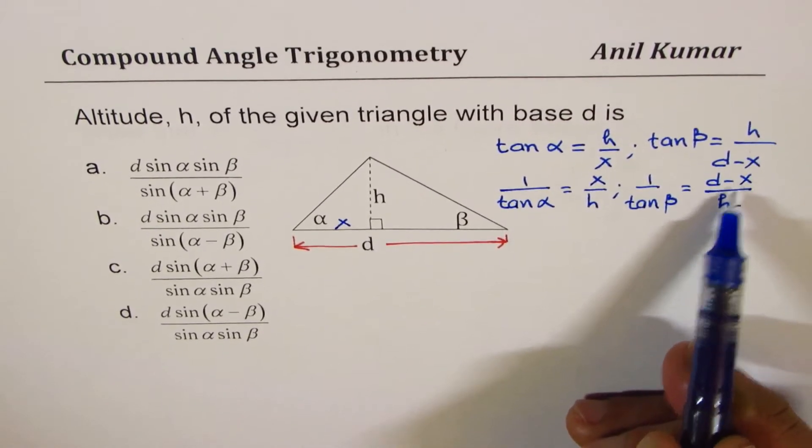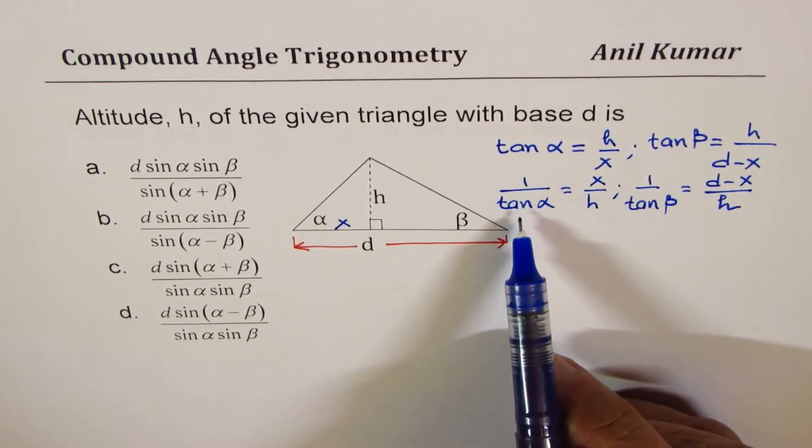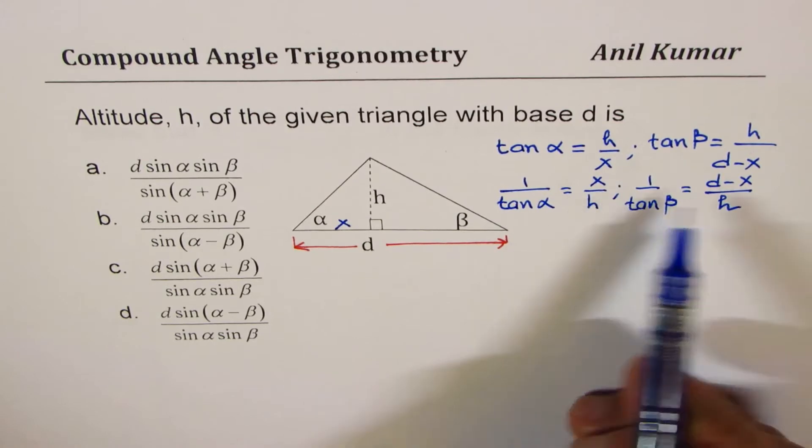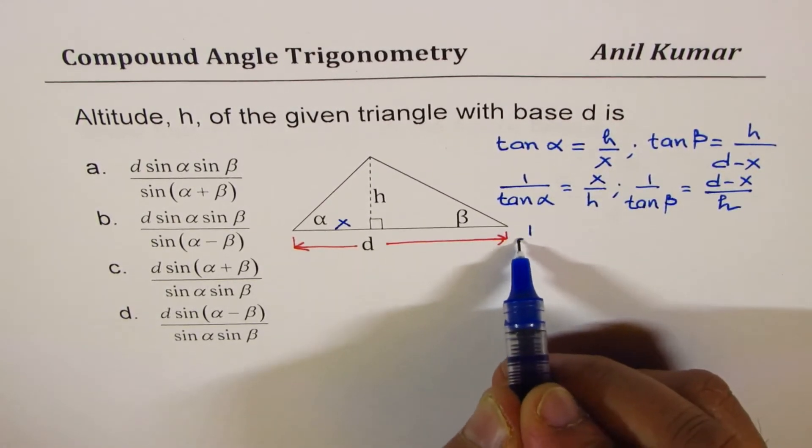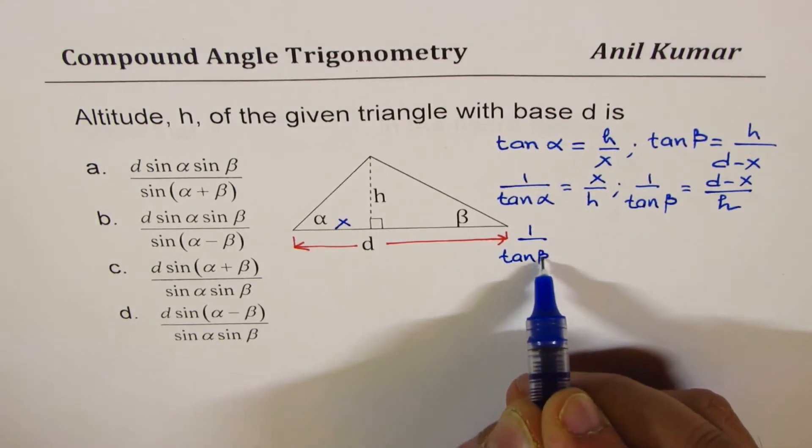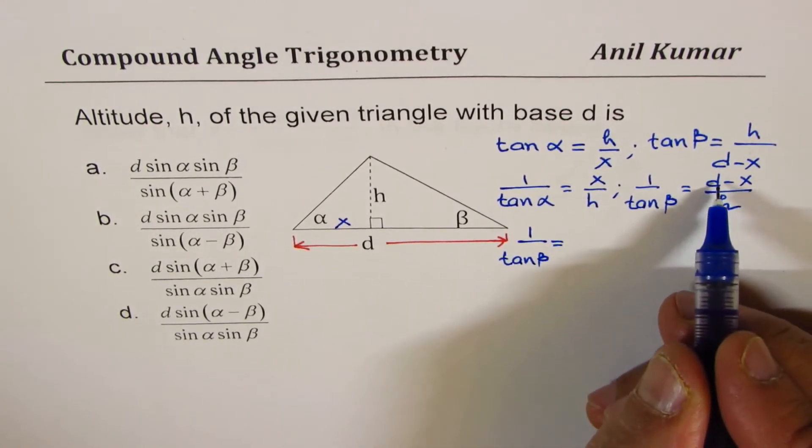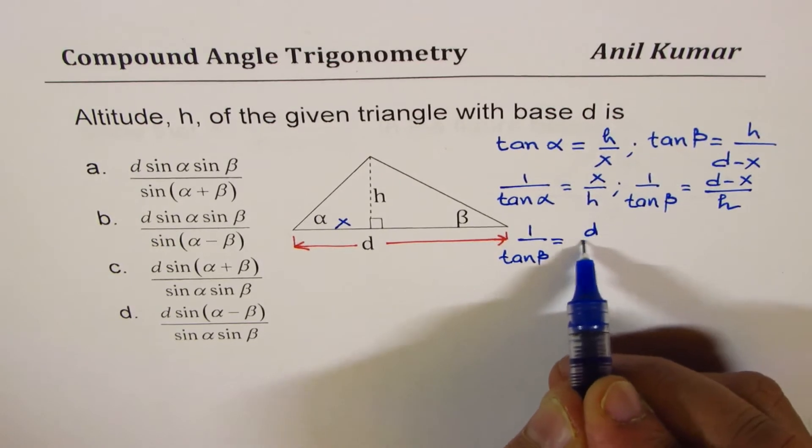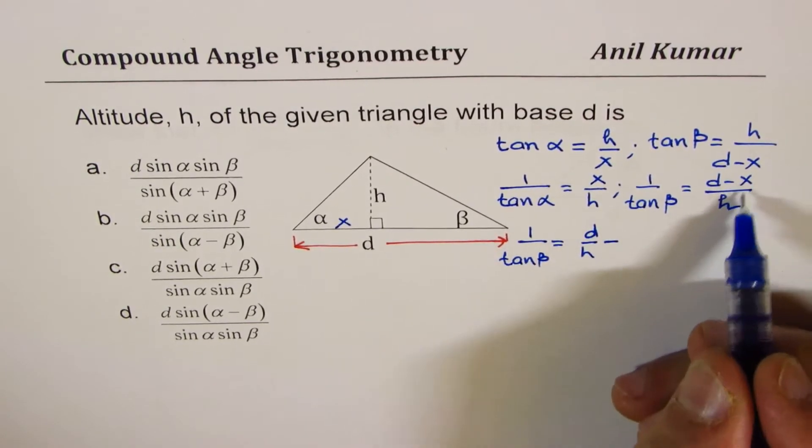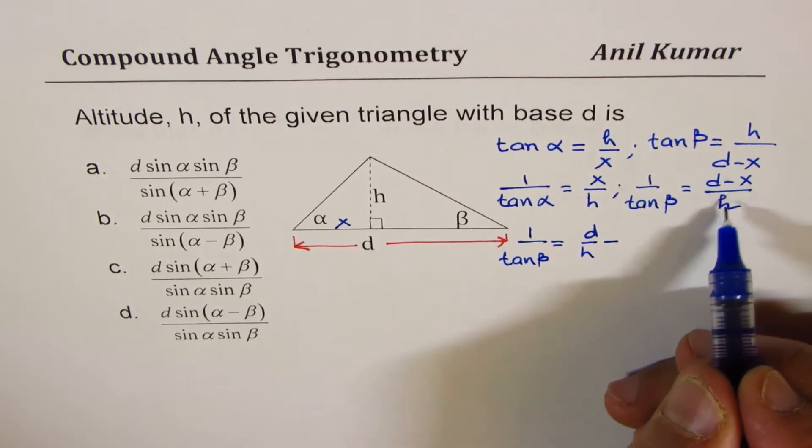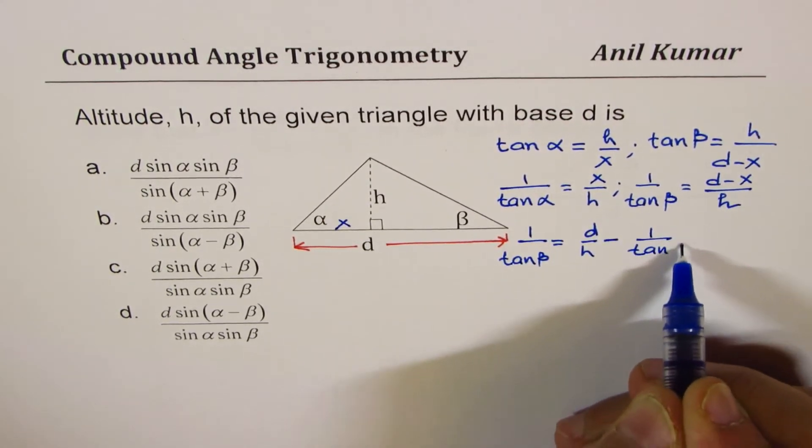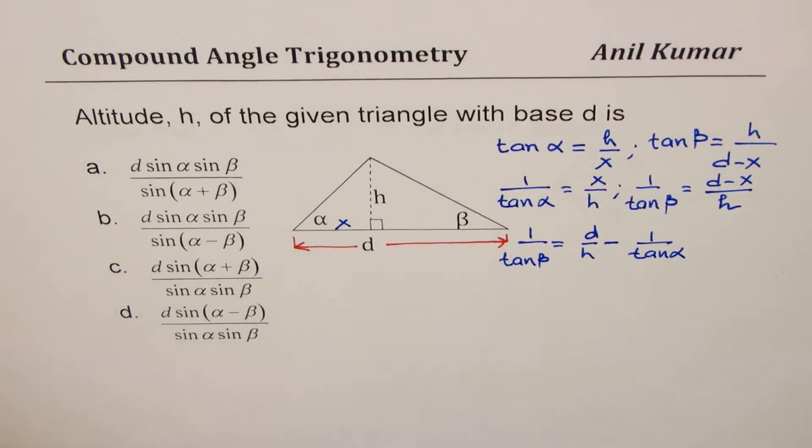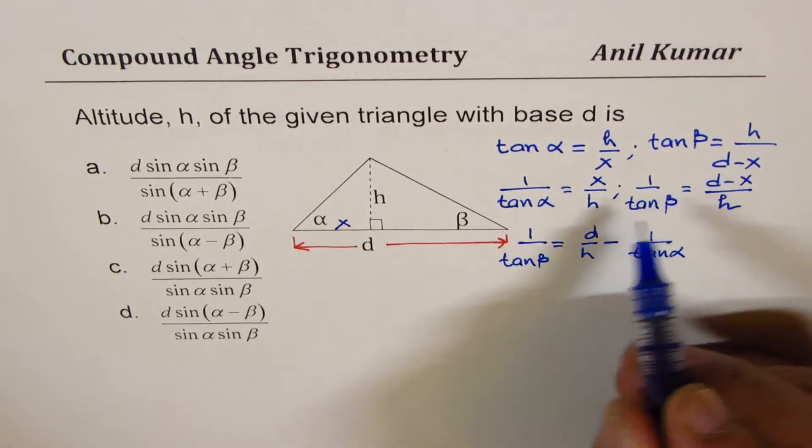Now x over h is 1 over tan α, so I could substitute this value there. And so what I get here is that 1 over tan β is equal to - we can split this as d over h minus x over h. So instead of x over h I will write 1 over tan α, does it make sense to you?